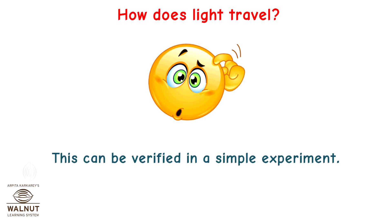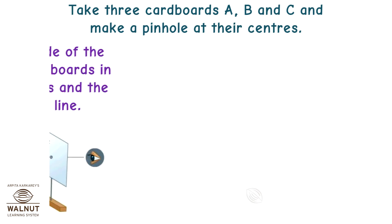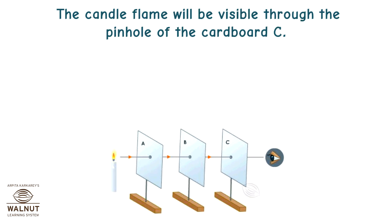This can be verified in a simple experiment. Take three cardboards A, B, and C and make a pinhole at their centers. Place a burning candle on one side of cardboard A and arrange the cardboards in such a way that the three pinholes and the candle flame are in a straight line. The candle flame will be visible through the pinhole of cardboard C.